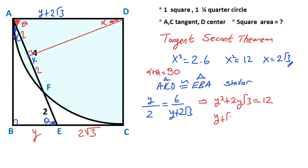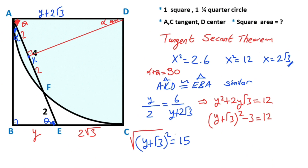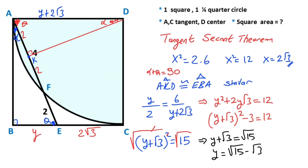If we complete the square for this expression, that means (y plus root three) squared minus three equals 12, so (y plus root three) squared must equal 15. Taking the square root of both sides: y plus root three equals root 15, and therefore y equals root 15 minus root three.